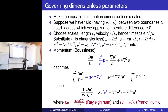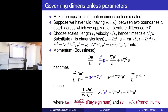The Rayleigh number can be thought of as a ratio of buoyancy force to viscous force. It is formulated as Ra = gαΔTL³/(νκ), where g is gravity, α is the thermal expansion coefficient, ΔT is the imposed temperature difference, L is the length scale, ν is molecular viscosity, and κ is thermal diffusivity. The Prandtl number is ν/κ.